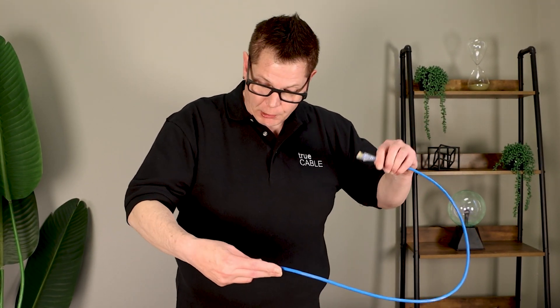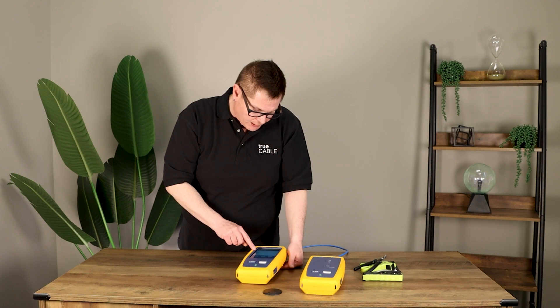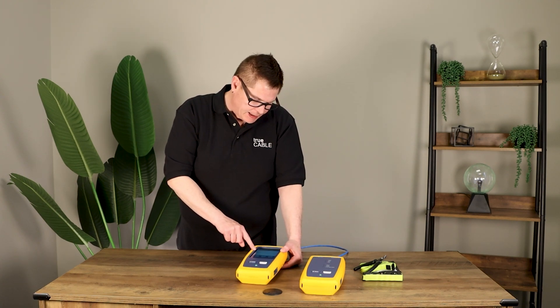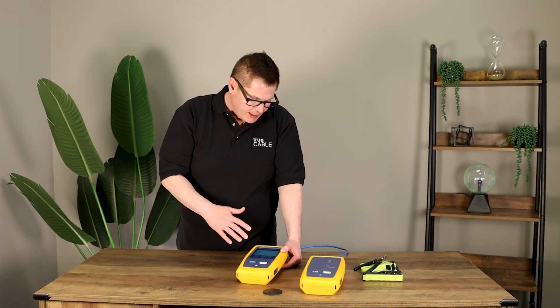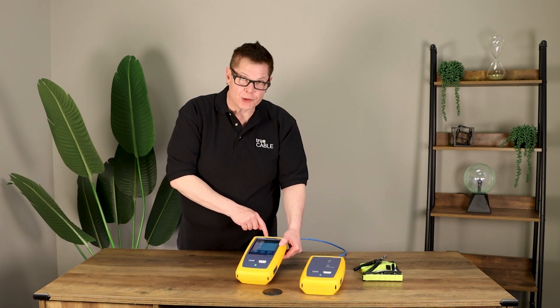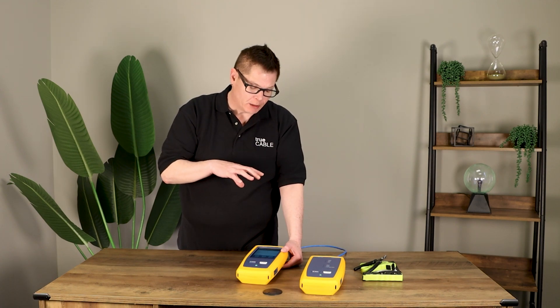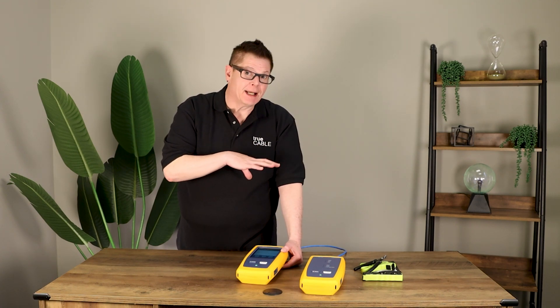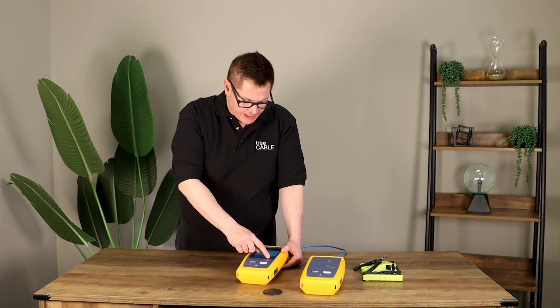So let's go ahead and put this into the Fluke tester and see what we get. Okay, so I have selected a very, very tight test to run here. I selected TIA category patch cord Cat 6, 2 meter, and I'm using patch cord adapters on the Fluke certifier. These patch cord adapters measure crosstalk at the connector. So it's a very tight test that I'm running here, and if there's anything wrong, we're going to know. So let's find out.